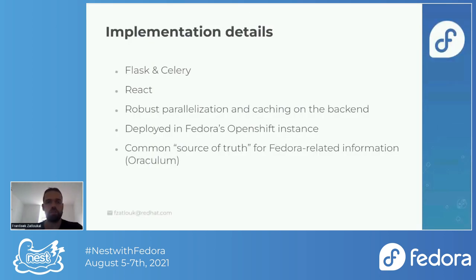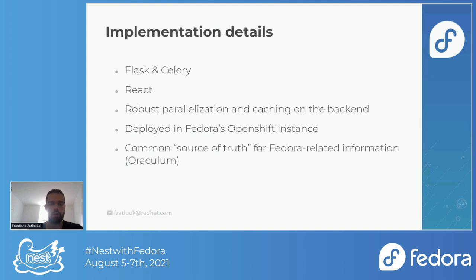Some implementation details, mainly about the backend — Oraculum — because I didn't work on the frontend. For questions about the frontend, you'll need to reach Lukasz Robets. The backend is heavily based around Flask and Celery, written in Python, using robust parallelization through Celery because we are refreshing the cache for a huge number of packages. That wouldn't work without a large number of workers fetching information in parallel. The frontend is a JavaScript application written in React. Oraculum and the package dashboard are currently deployed in Fedora's OpenShift instance — thanks to the Fedora infrastructure team for helping with that.